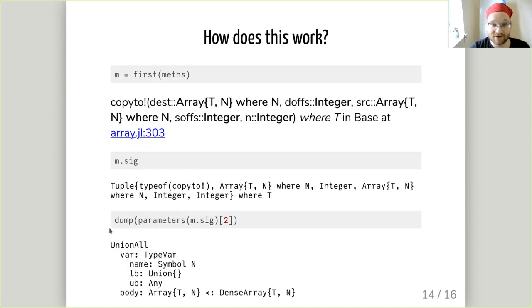How does this work? In brief, we're inspecting the method table. If we look at the method table for copy2, we can see this sig field that I mentioned. It's a union all type over tuples, parametric on t. And then we can interrogate it further and we can see that actually the second argument to that type tuple was a union all of arrays, which was array and it took an n and n had no upper bound. So you can look at these things.